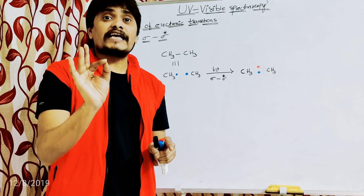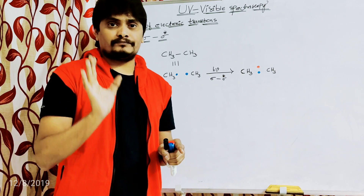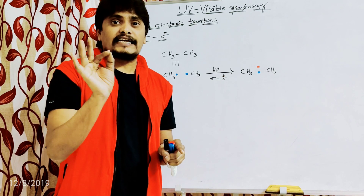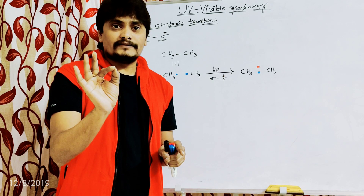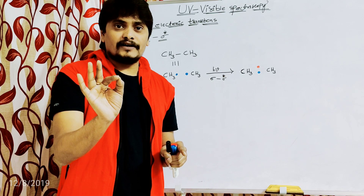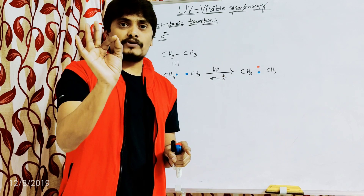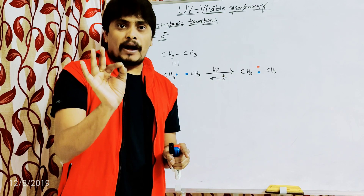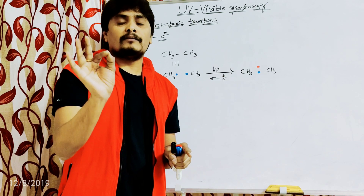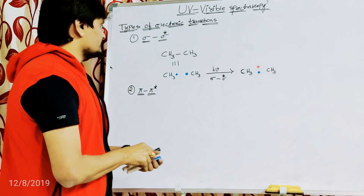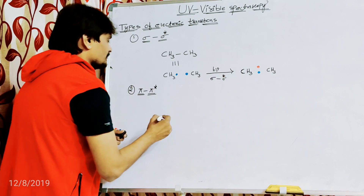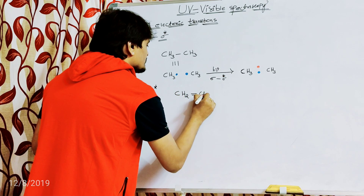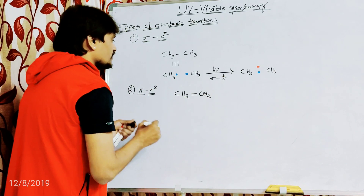The examples are unsaturated molecules without the heteroatom, because unsaturated means alkenes and alkynes. Alkenes and alkynes contain a double bond in which the pi to pi star transition is possible — that is, excitation of the electron from bonding pi molecular orbital to anti-bonding pi molecular orbital. A good example is ethene, CH2=CH2.